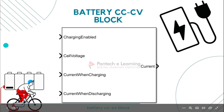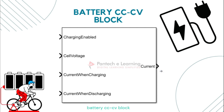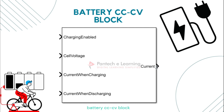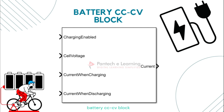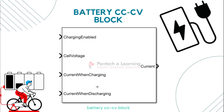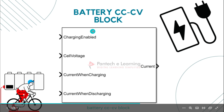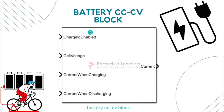Next is the output parameter: current. This parameter represents the current flowing into or out of the battery, typically specified in amperes. The convention is positive when the battery is being charged — meaning current flows into the battery — and negative when the battery is being discharged, meaning current flows out of the battery. These input parameters allow you to control the charging and discharging behavior of the battery by specifying the charge enable status, cell voltage, and desired charging and discharging currents. The output parameter battery current provides information about the current flowing into or out of the battery, allowing you to monitor the battery charging and discharging state. By adjusting these parameters in the simulation model, you can simulate different charging and discharging scenarios and analyze the behavior of the battery system with respect to the current flowing.